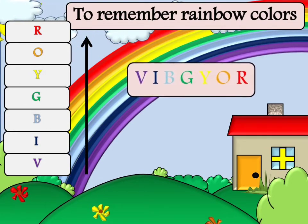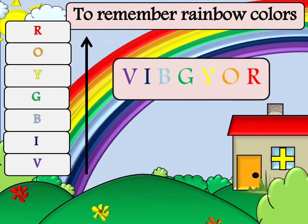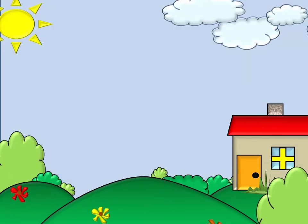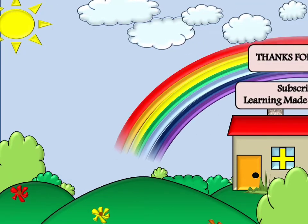Read it backward: V-I-B-G-Y-O-R, Vibgyar. Good job! Now you can learn the colors of a rainbow very easily.